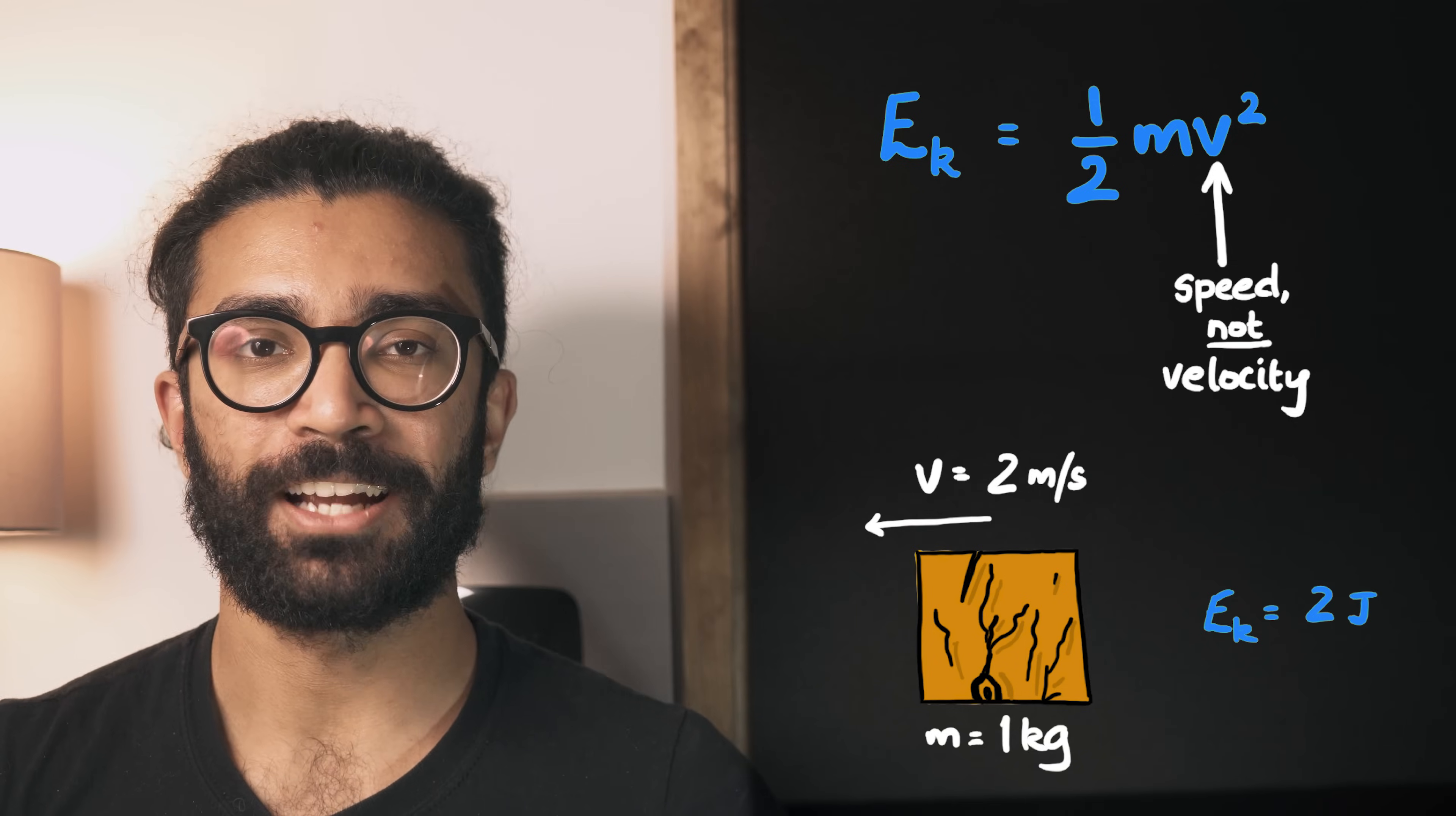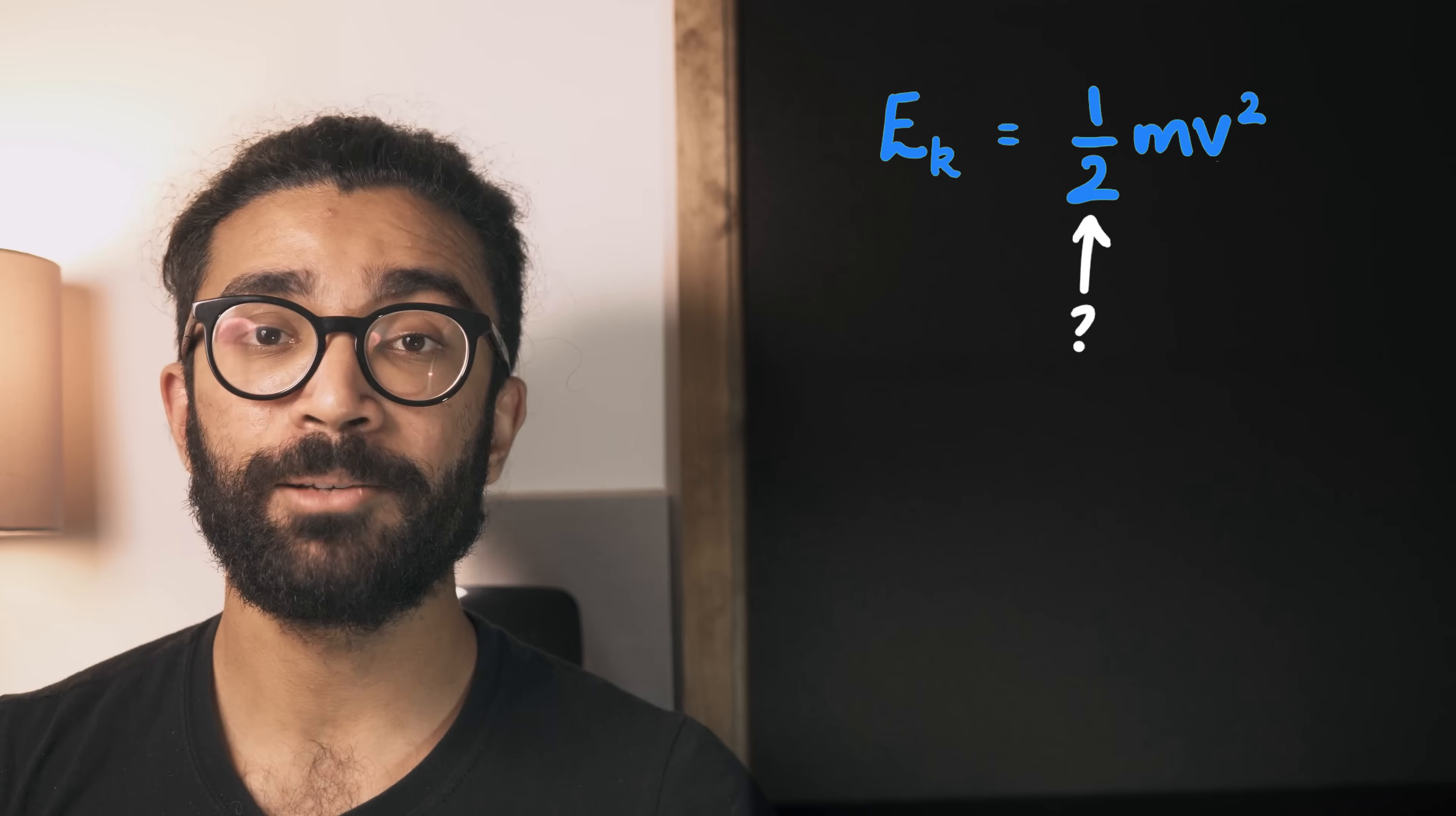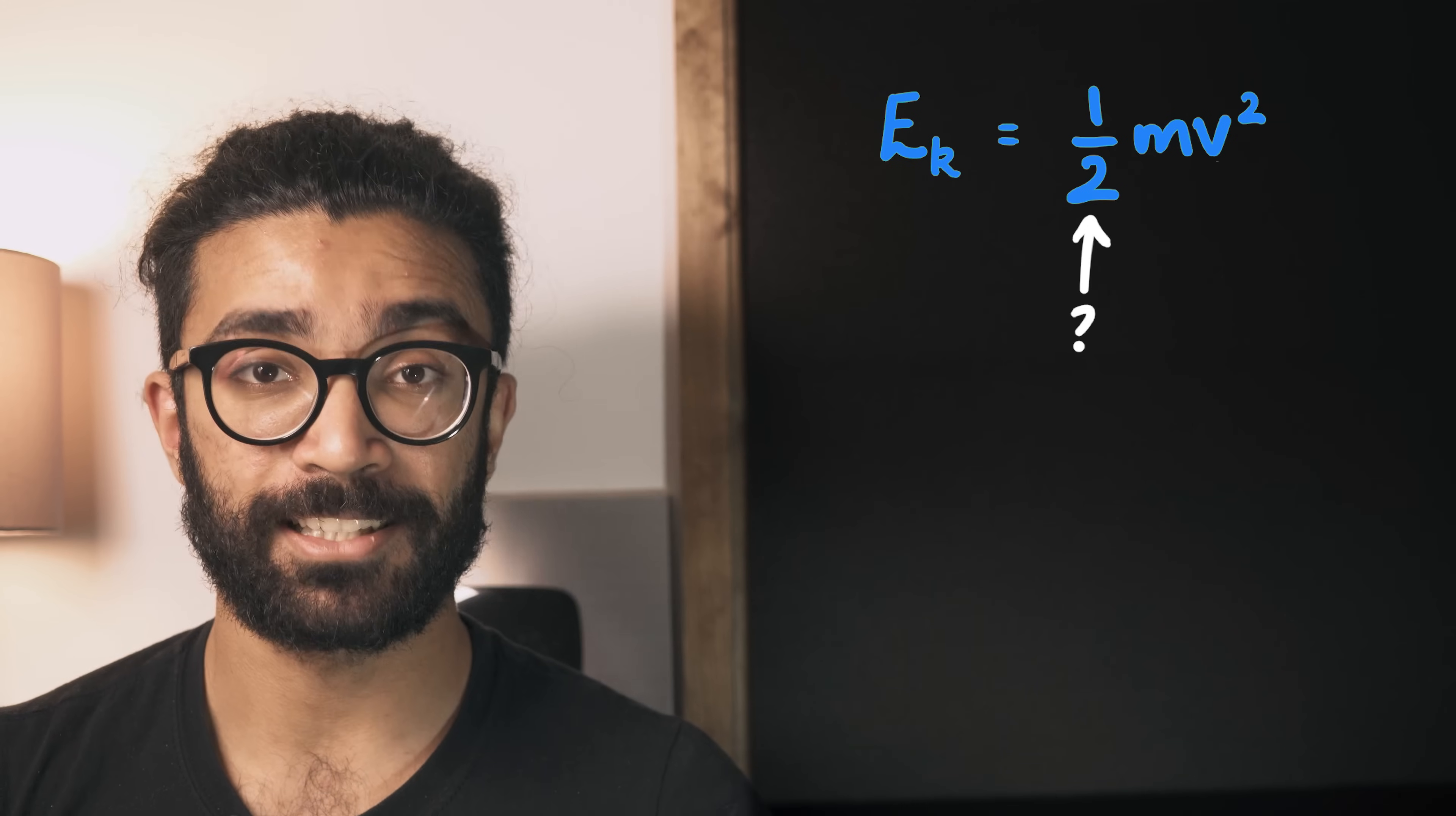Secondly, there's this factor of one half. Why is it there? Why is the kinetic energy one half mv squared rather than just mv squared or something? Luckily we'll see one reason for the one half being there in level 4 of this video. For now though, let's move on to the next level.